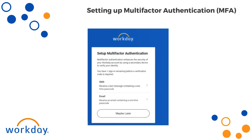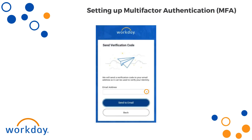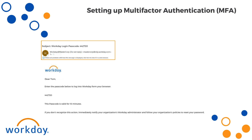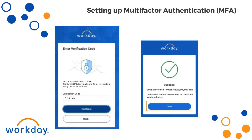To set up MFA with your email, select Email. Once you select Email, you will be prompted to select your email from the list, then click Send to Email. Next, check your email for the verification code. Keep in mind the passcode will only be valid for 10 minutes, so you must do this promptly. Enter the verification code found in your email and then click Continue. Once the verification is complete, click Done.